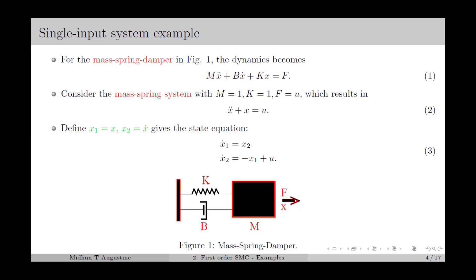We consider a mass-spring system where the friction coefficient b is equal to 0, and we select the mass m equal to 1, the spring constant k equal to 1, and the force f as the control input. This gives the dynamics as in equation number 2. By defining the state variable x1 equal to x and x2 equal to x-dot, we obtain the state equation as in equation number 3. So we have two state variables x1 and x2, and this is a second order linear system.